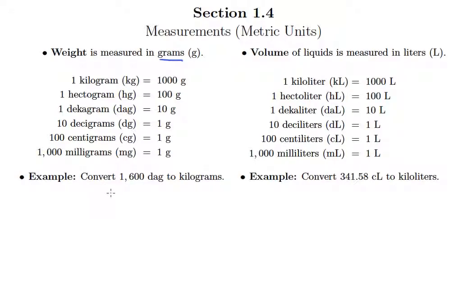In this first example, I want to convert 1600 decagrams to kilograms. One thing to be careful of when you see decagrams, or desigrams for that matter, is you have these two prefixes that both start with D. DA will always be the abbreviation for deca, and then just a simple D will be desi. So that's how you can tell the difference between them.